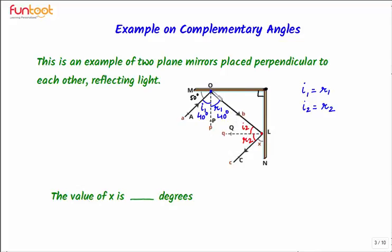At point O this angle is also 90 degrees as OP is the normal to the surface of the mirror. If this angle is 40 degrees then the remaining angle here will be 50 degrees. If we call this point X, then triangle XOL is a right angle triangle because it is given in the question that the two mirrors are perpendicular to each other. So if this angle is 90 degrees, then the 50-degree angle and the remaining angle should add up to 90 degrees, since the sum of all three angles in a triangle is 180 degrees. So if this is 50 degrees, then this will be 40 degrees.